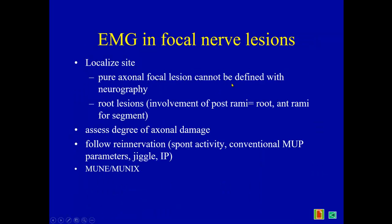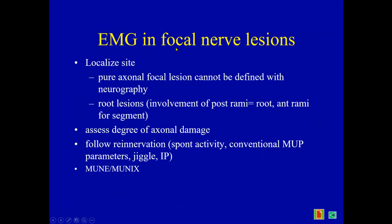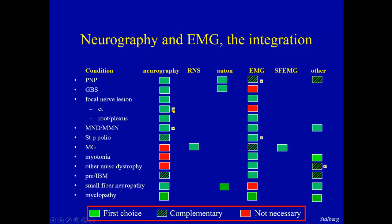Regarding EMG in focal nerve lesions: it is used to localize the lesion — for example, focal axonal lesions and root lesions. We can also assess the degree of axonal involvement and follow the reinnervation as well.